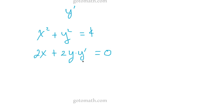And then we take the derivative of 4 and the derivative of 4 is 0. So now what we'll want to do is solve for y prime here.